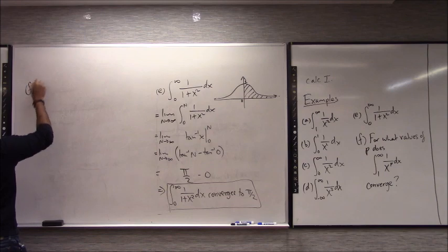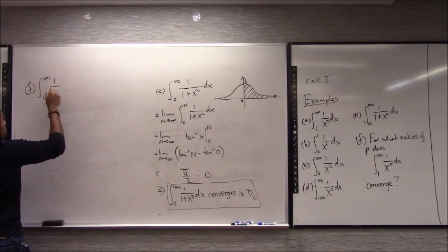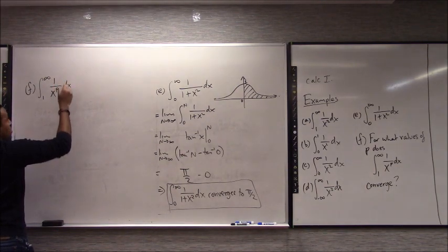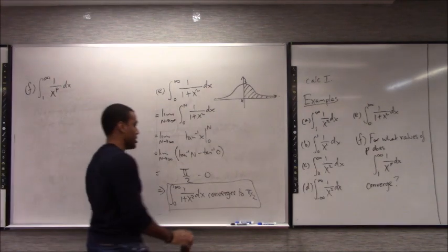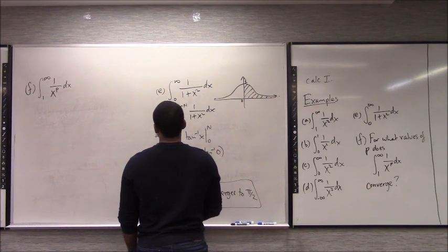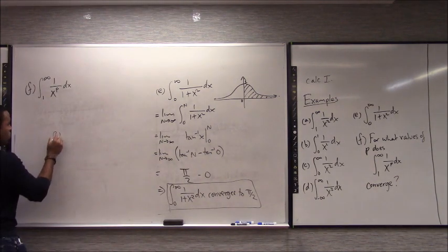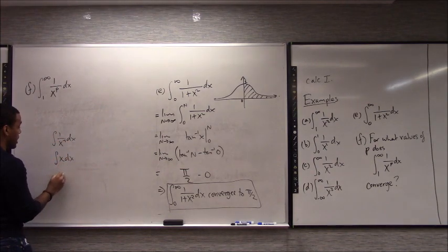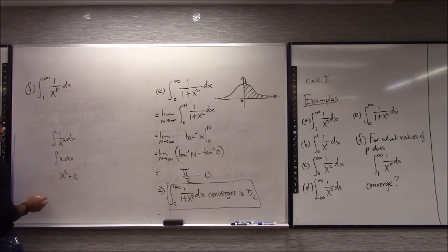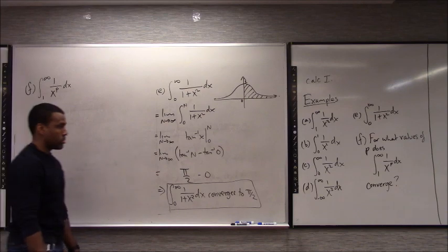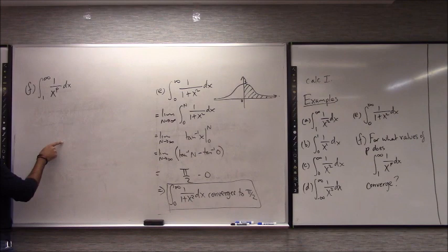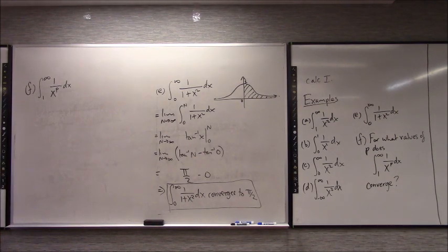For (f): for what values of p does the integral from 1 to infinity of 1/xᵖ dx converge? We know p = 2 works. If p is negative, that means you flip it and get a positive power of x — integrating that between 1 and infinity will diverge. So negative p's aren't going to work out. We need to worry about cases.